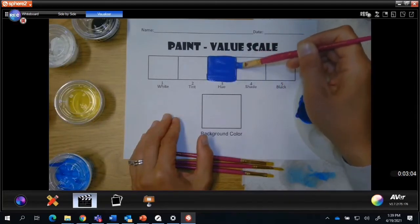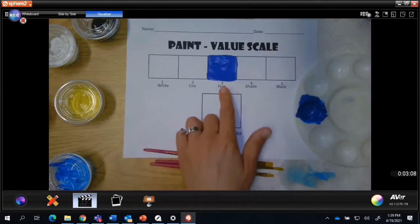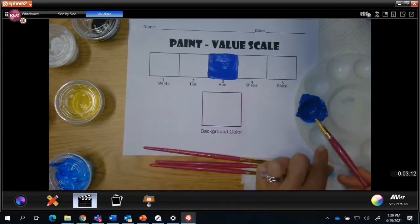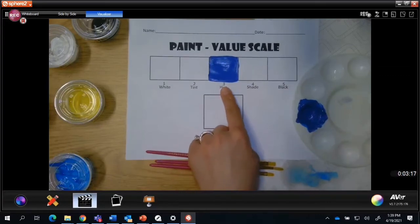The reason we do a value scale is so we can plan out our values and make sure we're going to get equal amounts of contrast between all of our values before we actually get started on our painting. So I have my hue, which is my number three value.